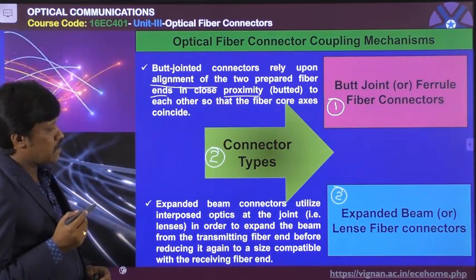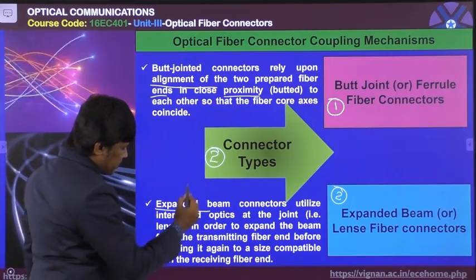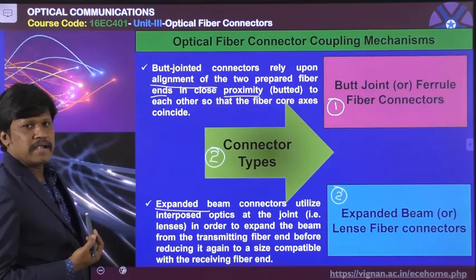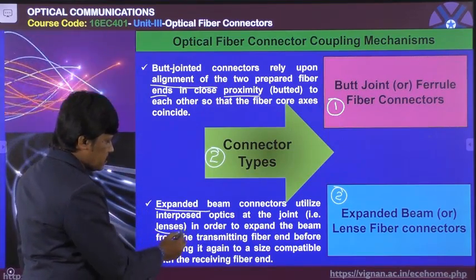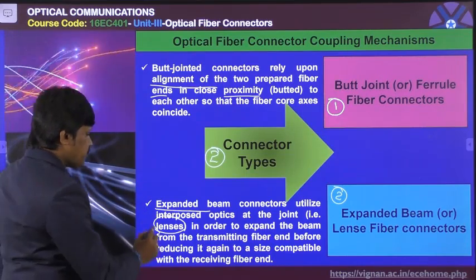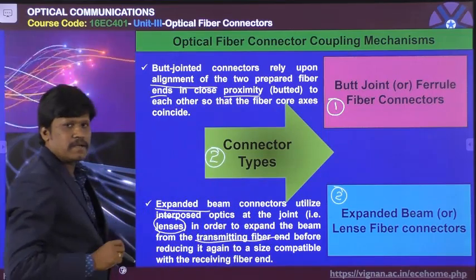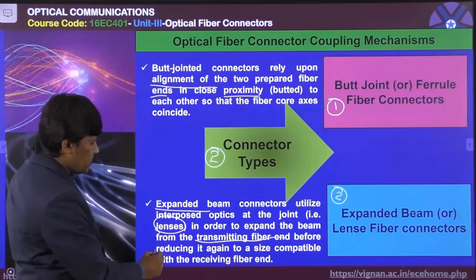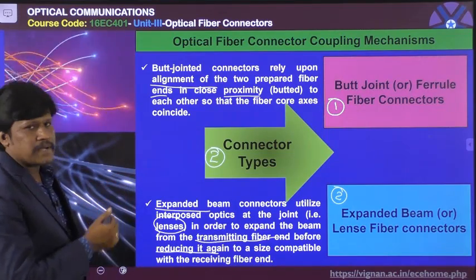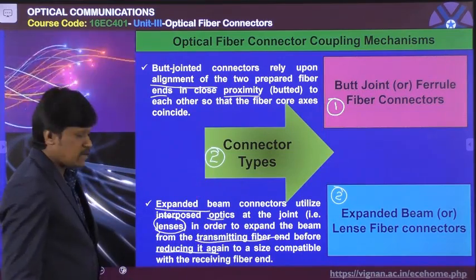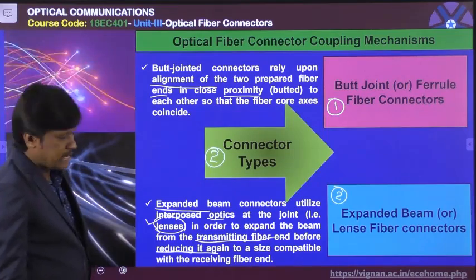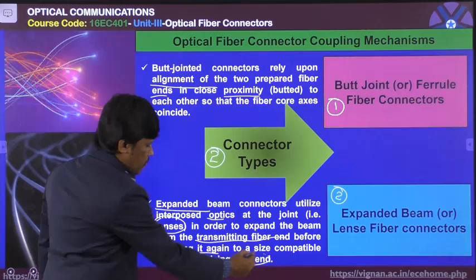Expanded beam lens fiber connectors utilize interposed optics at the joint — that is, lenses — in order to expand the light beam from the transmitting fiber end before reducing it again to a size compatible with the receiving fiber end.